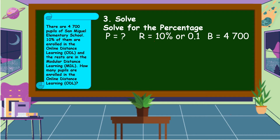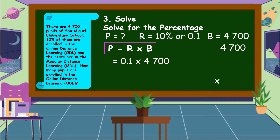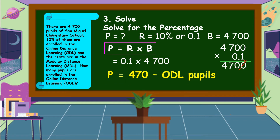The base is equal to 4,700. We're going to substitute the value of rate and base into our formula: one-tenth times 4,700. Multiplying: 1 × 0 = 0, 1 × 0 = 0, 1 × 7 = 7, 1 × 4 = 4. Then we count the decimal places in our factors — we only have one decimal place, so we can cancel the zero in our product. Therefore, the percentage is equal to 470.